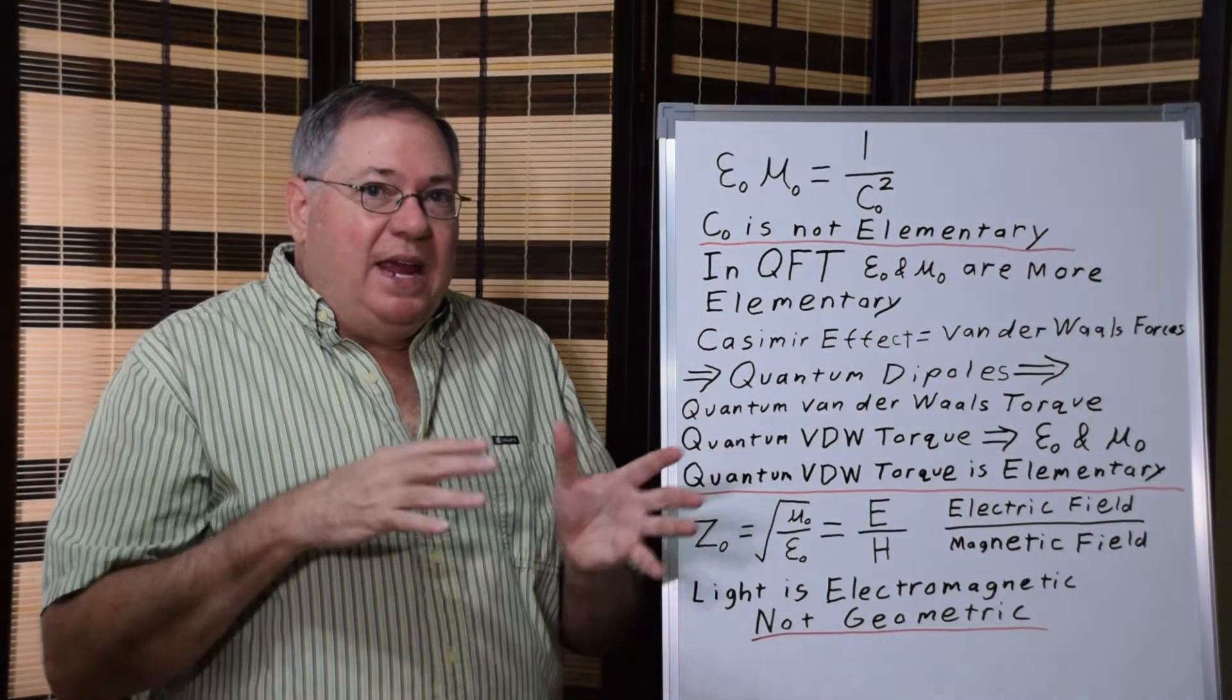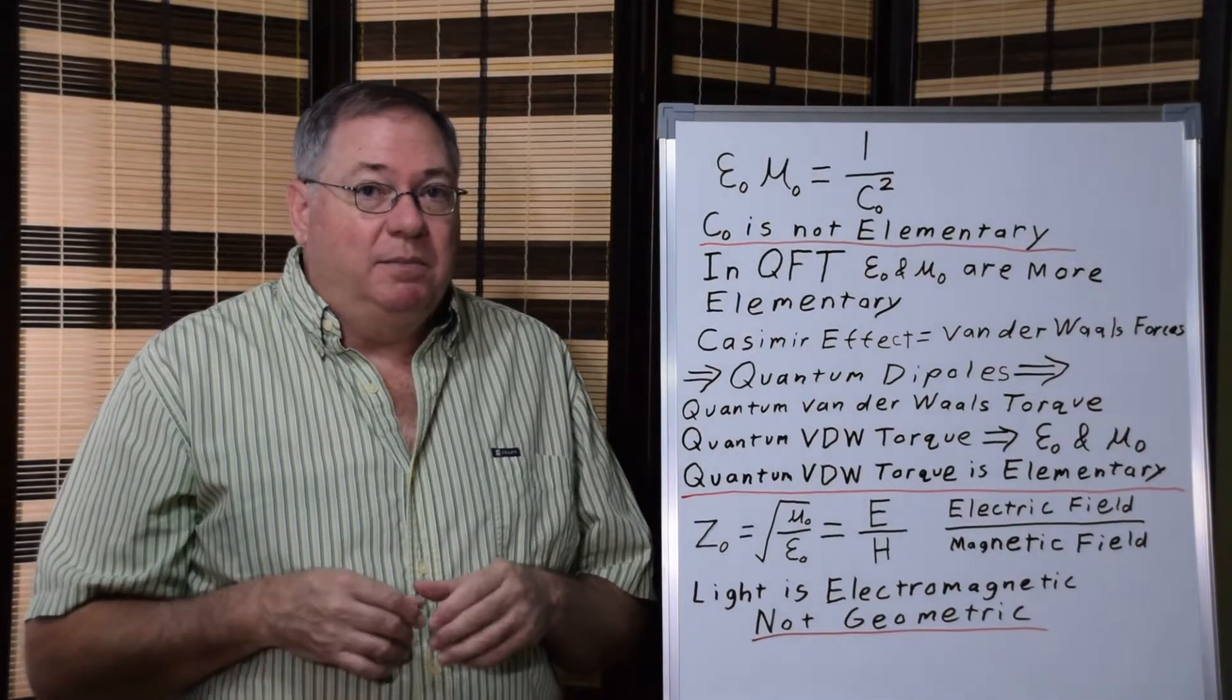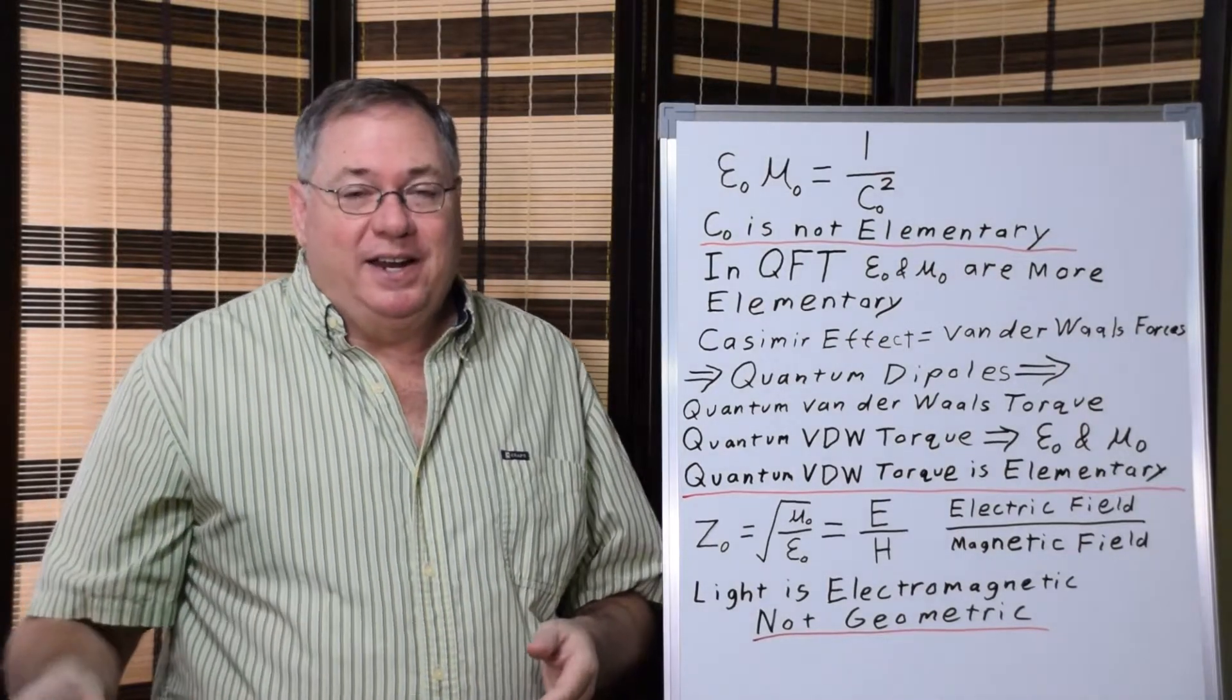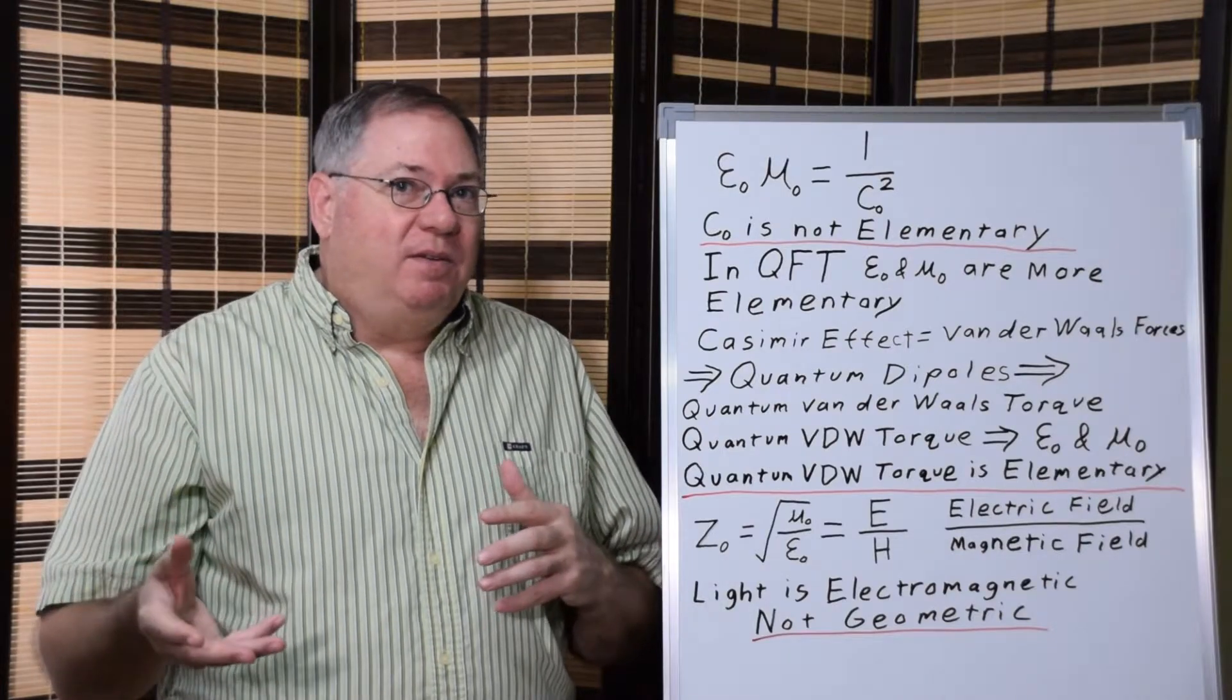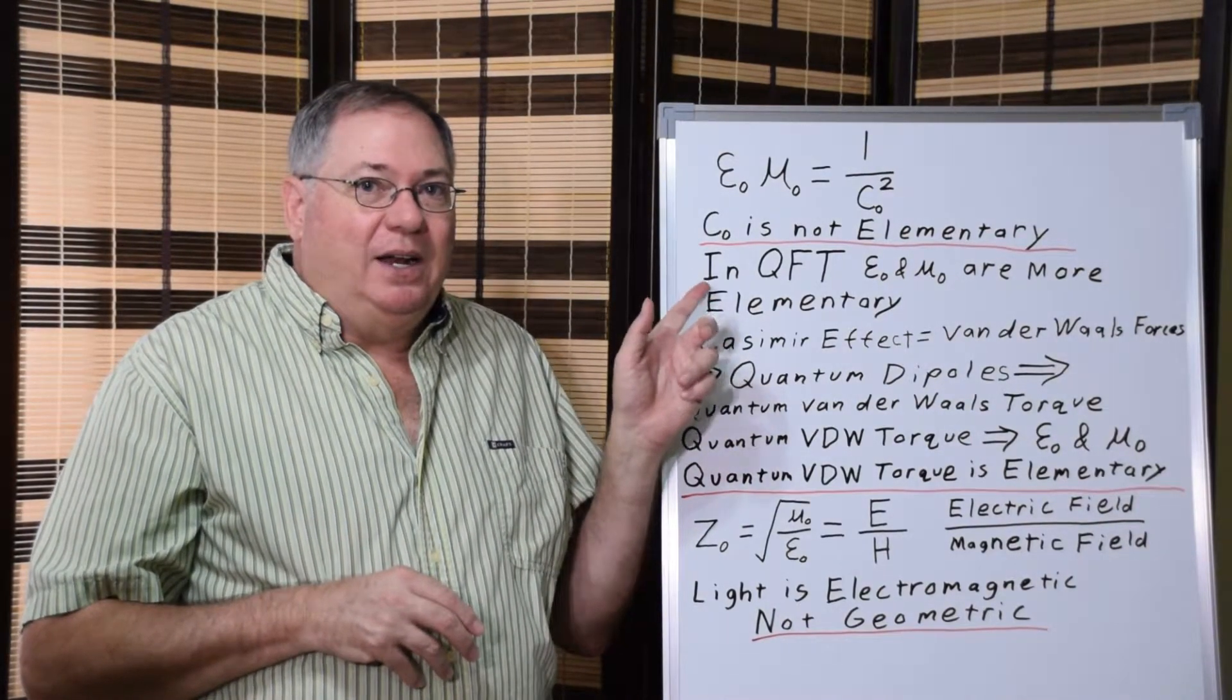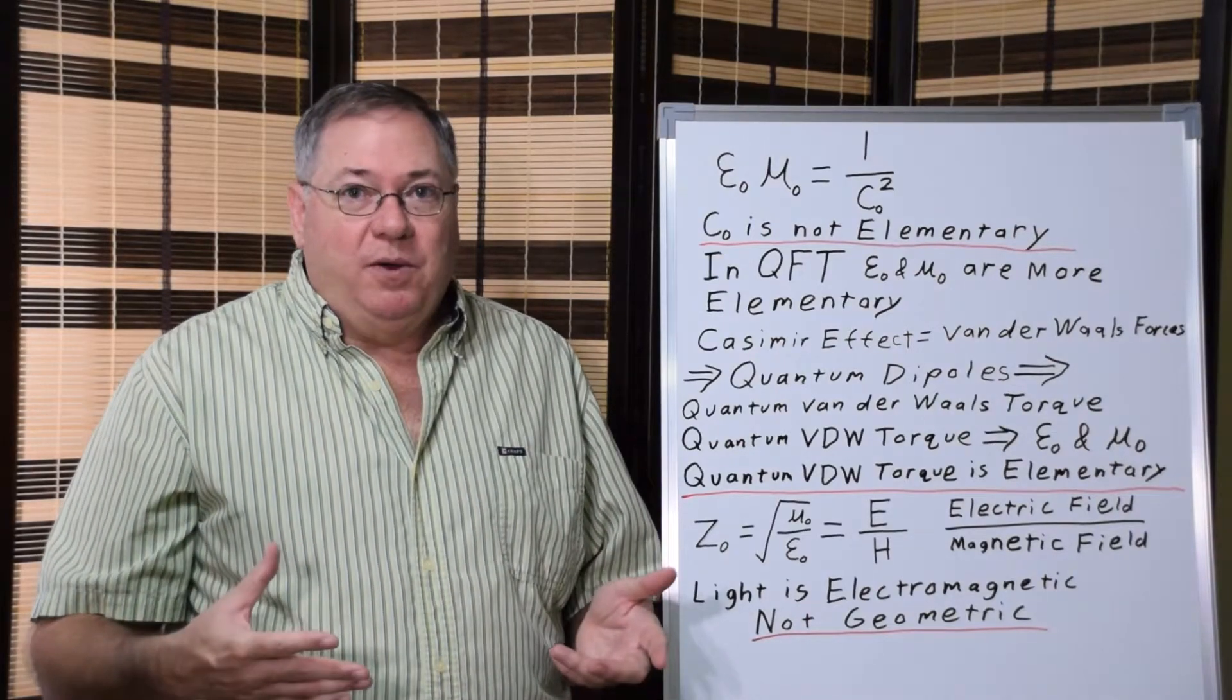So when we think of it that way, it's the quantum Van der Waals torque that's the most fundamental of constants, if you were to present them as constants. And then the permittivity and permeability, the electric and magnetic constant. And then after that, the speed of light is a tertiary constant. And so when you're dealing with relativistic effects, frame transformation, special relativity, general relativity, you really have to start with what's going on with the Van der Waals torque and the permittivity and permeability of space, and then figure out what's going on with the speed of light.